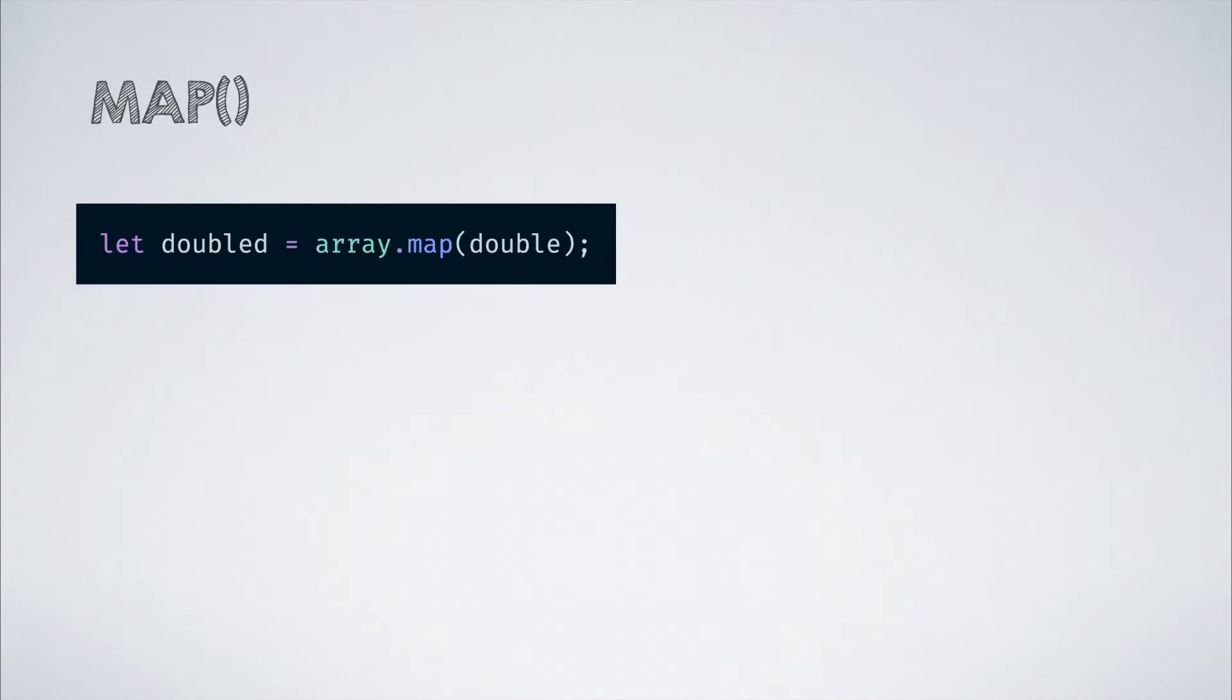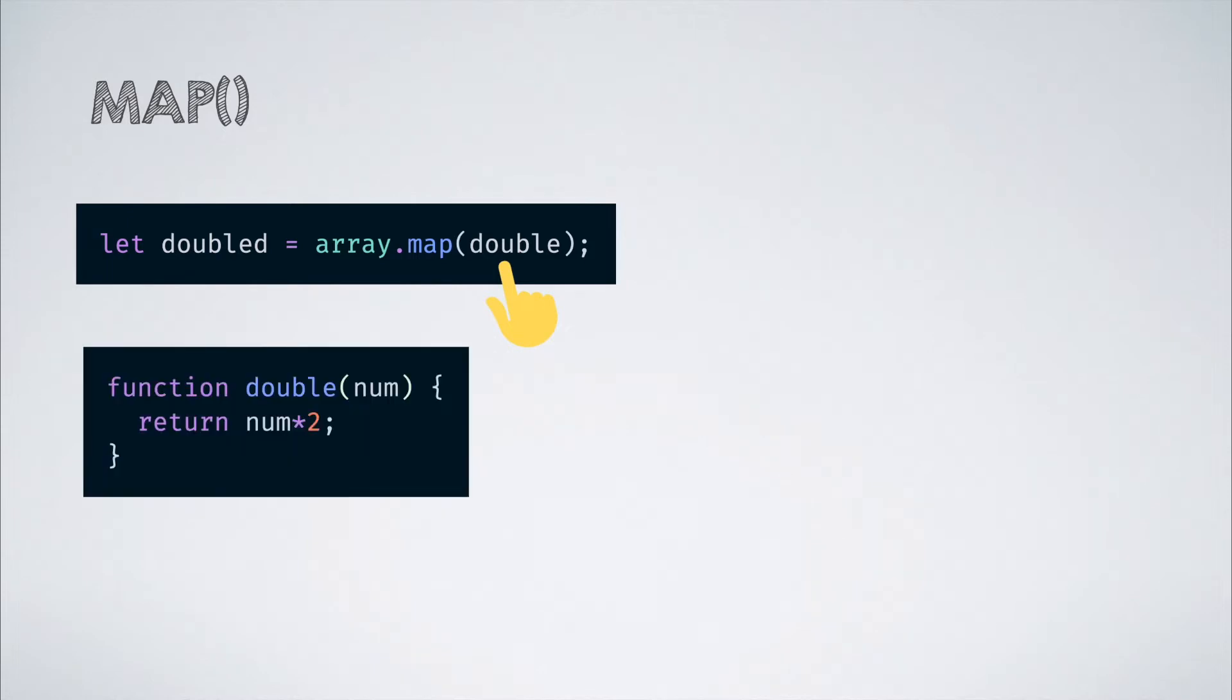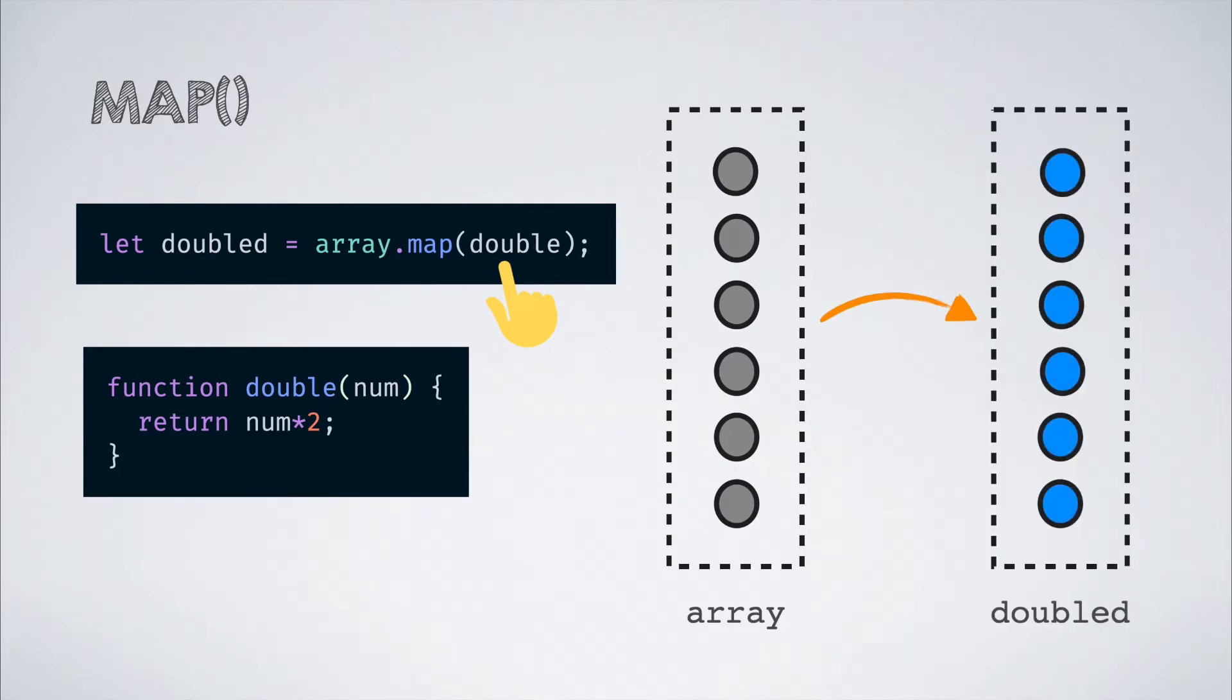The map method is called on an array and then passed a modify function to it as a param, which is the double function in this example. The map method runs this function on each and every element of the original array and returns an array that contains these modified elements in the corresponding positions.